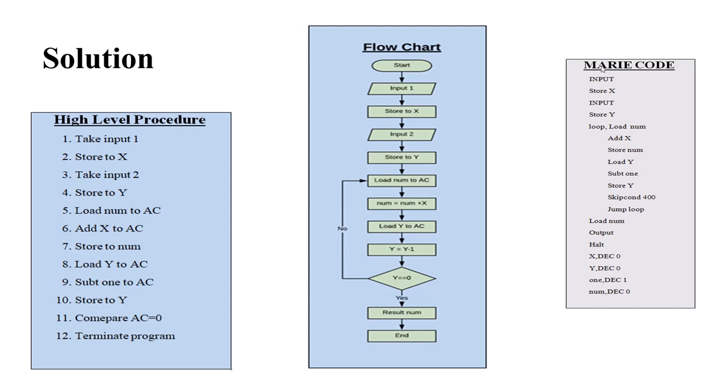Now we show the Marie code section. We use input to take inputs, then use add and subt to compute num plus x and y equals y minus 1 respectively. We use the skipcon 400 condition for comparing the y value to 0. Note that we need to declare variables with initial values as x equals 0, y equals 0, 1 equals 1, num equals 0.